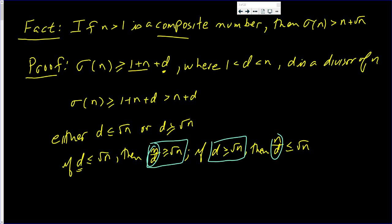So, without loss of generality, let's assume that the divisor that's bigger than the square root of n, we call it d. Without loss of generality, assume d is greater than the square root of n. If it isn't, if n over d is greater, I'll put n over d over there.